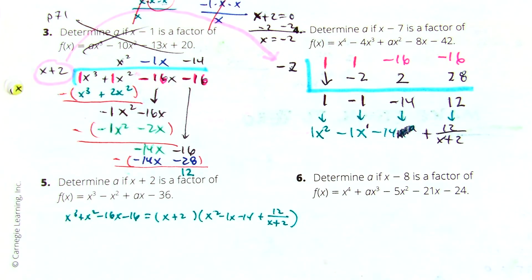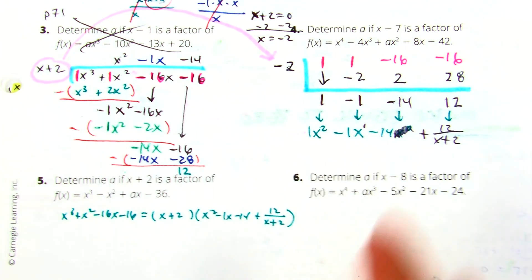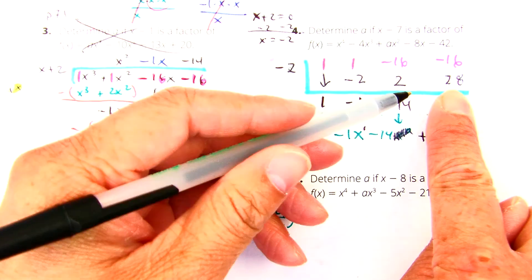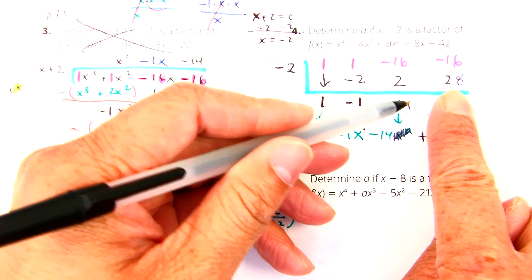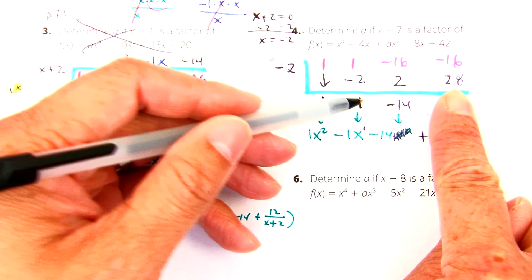Now, the second way to figure out what these numbers mean is that if you put your finger on the remainder, 12, and you just cover it up, then this is ascending, x to the zero, right? This is just a constant, just a number, and then you just add x, and then x squared. Do you see that?